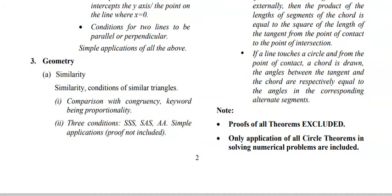For Semester 1 Geometry, as mentioned earlier, you have Similarity. In similarity, you will study the two conditions of similarity and comparison with congruency, basic proportionality theorem, and the three conditions — SSS, SAS, and AA principles. Importantly, there is no proof required. They will not ask you to prove any theorems or properties. You only use these conditions while solving problems.